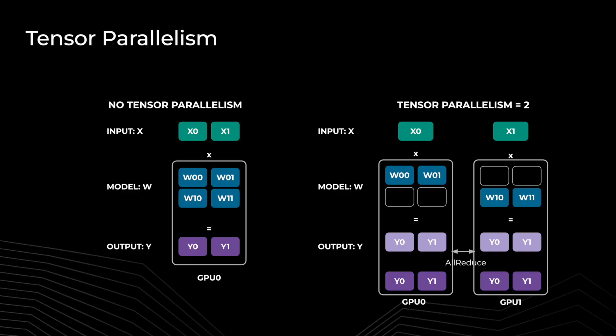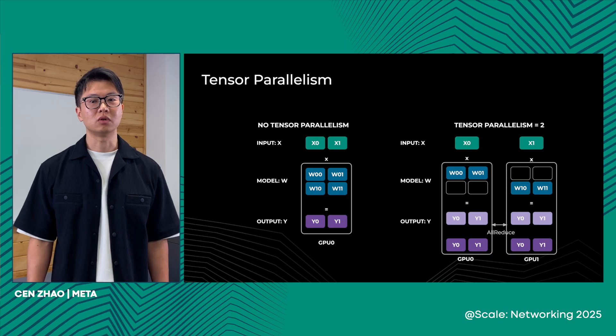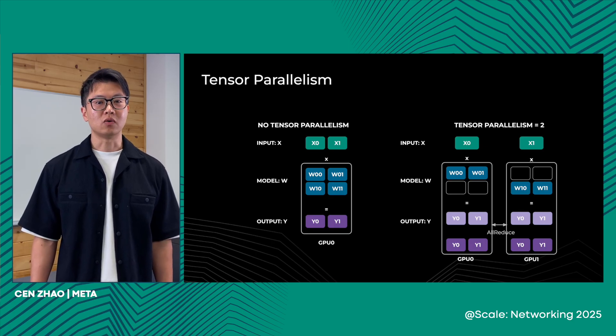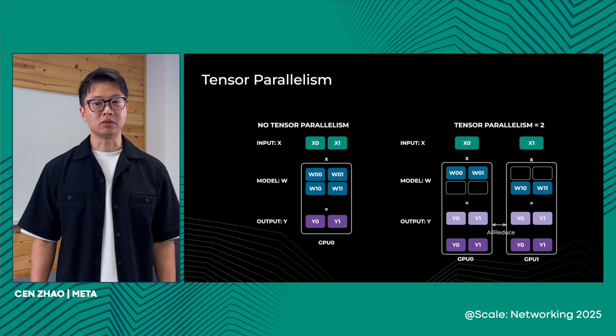Thank you for the great introduction. Tensor parallelism is a way of model sharding. In a simplified example, imagine you have a 1×2 input vector multiplied by a 2×2 model weight to get a 1×2 output. When the model is too big to fit on one GPU, we split it across multiple GPUs — in this example, row-wise, with the first row on GPU 0 and the second on GPU 1. We also split the input, and after multiplication we get partial results. To get the final result, we run an all-reduce to aggregate. So with tensor parallelism, you can fit a larger model across multiple GPUs, but we need to introduce the all-reduce collective.